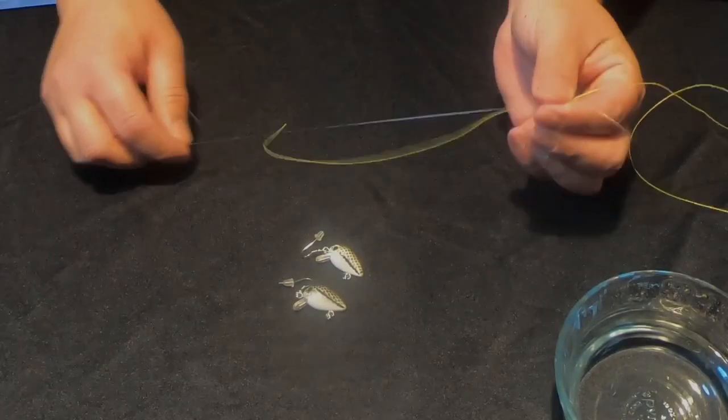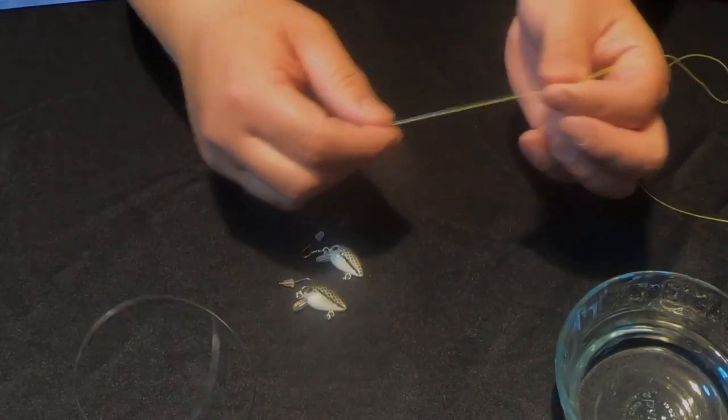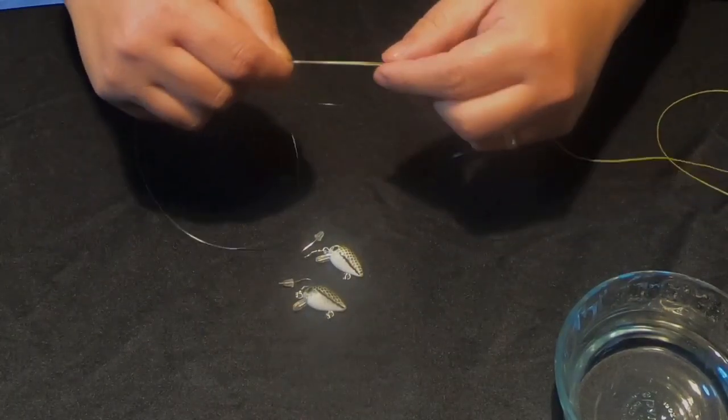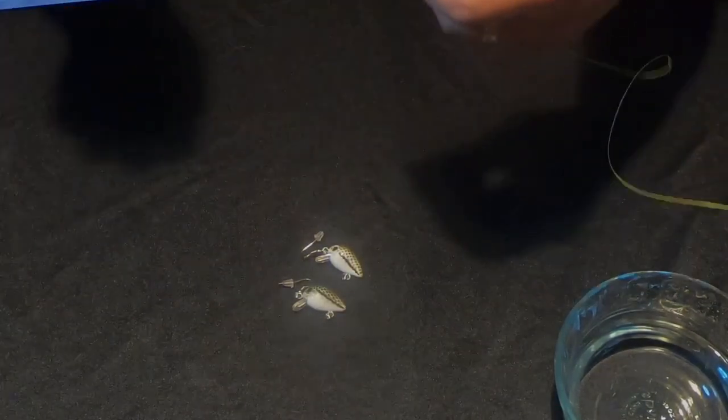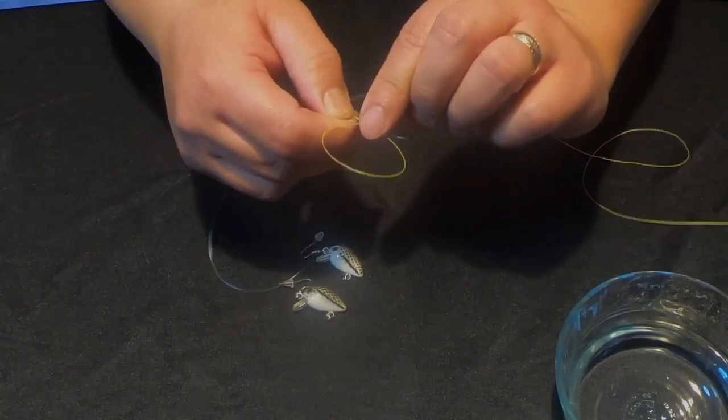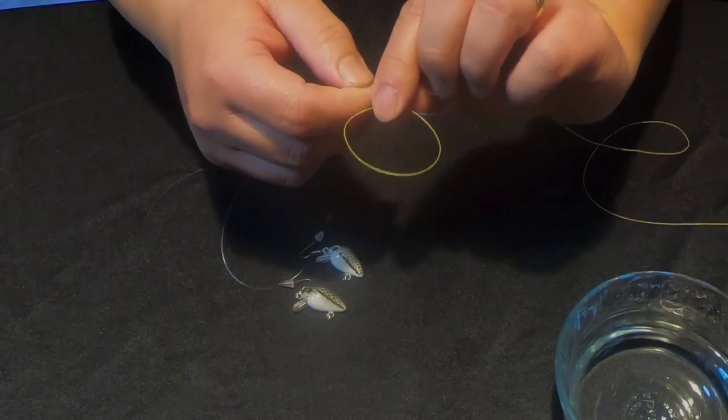Just line it up so the braid is towards me, the mono is towards you towards the camera. I'm just gonna line them up just like that and I'm gonna push them together and it's gonna automatically form a loop. I'm gonna finish that loop with my left hand.